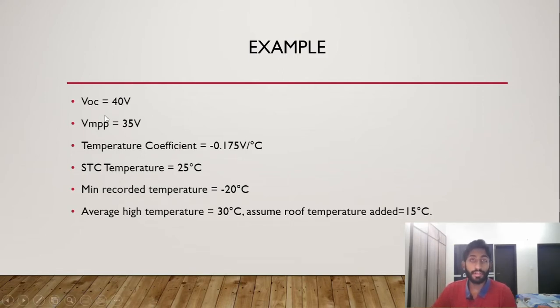Example is that we have a Voc of 40 volts, Vmp of 35 volts, temperature coefficient of minus 0.175 volts per degree Celsius. STC, the standard testing condition temperature of that, is 25 degrees Celsius. We know that the minimum recorded temperature for that location, I've just given a random number, is minus 20 degrees Celsius, and the average high temperature is 30 degrees Celsius. These are random made-up numbers, and I've also assumed that the roof temperature that is added, because it's already hot, preheated, it's going to be hot itself before, so I've said it's 15 degrees Celsius.